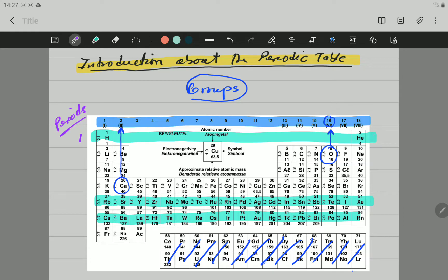we have 1, which is the same as here. We have Period 2, which is the same as here. We have Period 3, 4, 5, 6, and 7. 3, 4, 5, 6, and 7 is the last one that you can see. Alright? So, the periods are going horizontally from left to right. Okay? So, those are the periods.